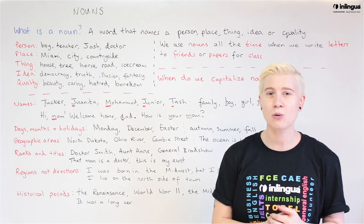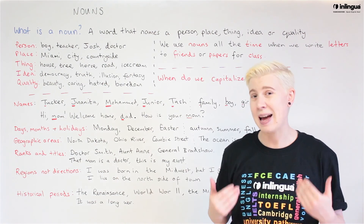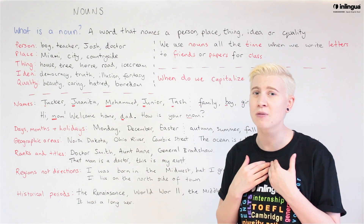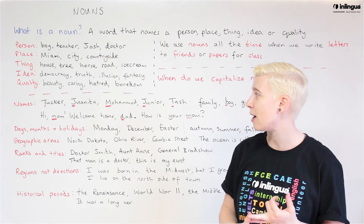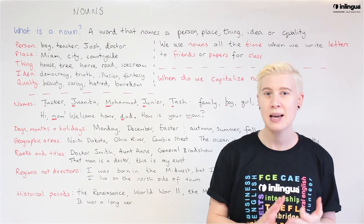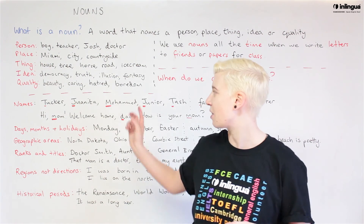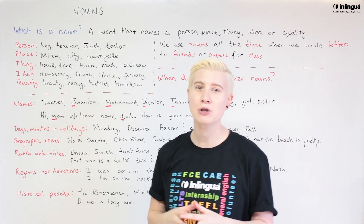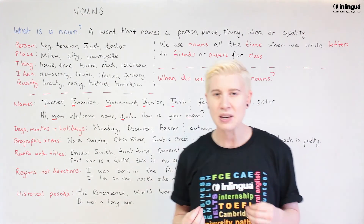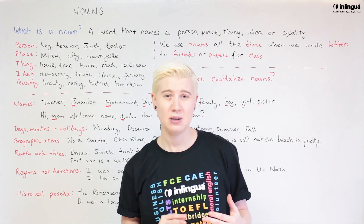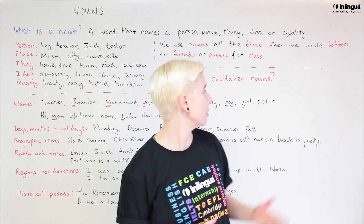Also, qualities. We cannot hold them, but we can have them. They can be part of us, like beauty, caring, hatred or boredom. So those are the names of some qualities. Nouns are names and we use nouns all the time.